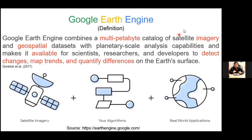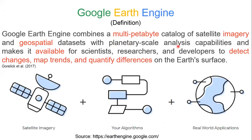So what is Google Earth Engine? According to the definition, Google Earth Engine combines a multi-petabyte catalog of satellite imagery and geospatial datasets with planetary-scale analysis capabilities, and makes it available for scientists, researchers, and developers to detect changes, map trends, and quantify differences on Earth's surface. It has a multi-petabyte catalog — after 1 GB there is 1 TB, and 1000 GB combined becomes 1 petabyte. The Google Earth Engine platform has multiple petabytes — 5 to 7 or more — of dataset consisting of satellite imagery and geospatial datasets.